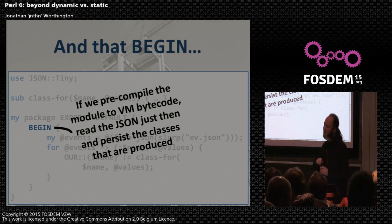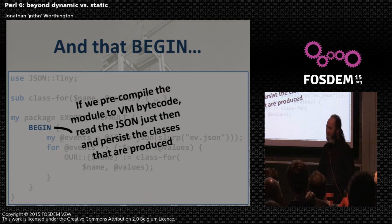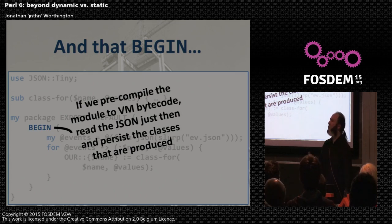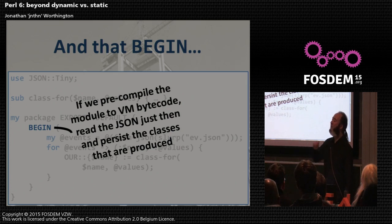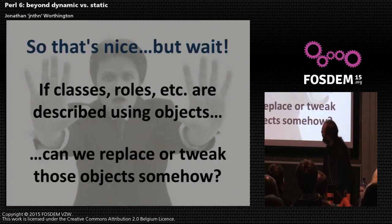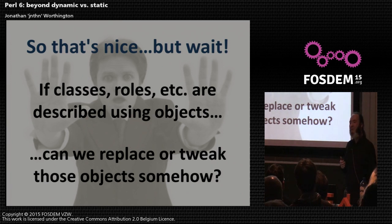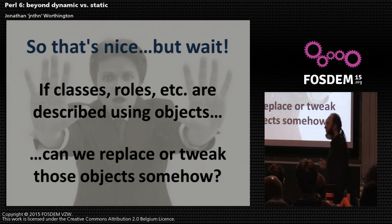What happens when a new event is added to the JSON file? Then you recompile — you treat it as a new version of the module. At the moment it happens at module install time. The JSON file ships with the wrapper module, and when you update to a new version with a new JSON file, we recompile it.